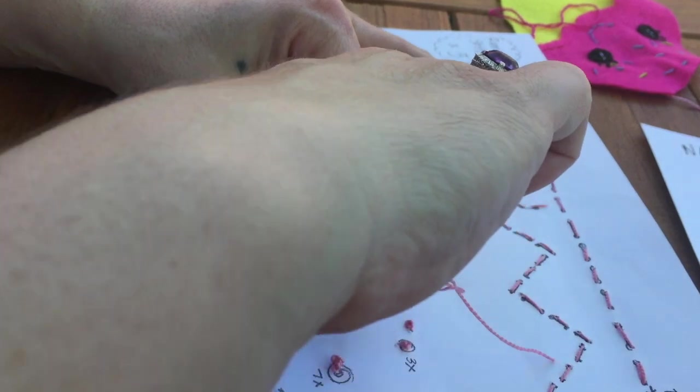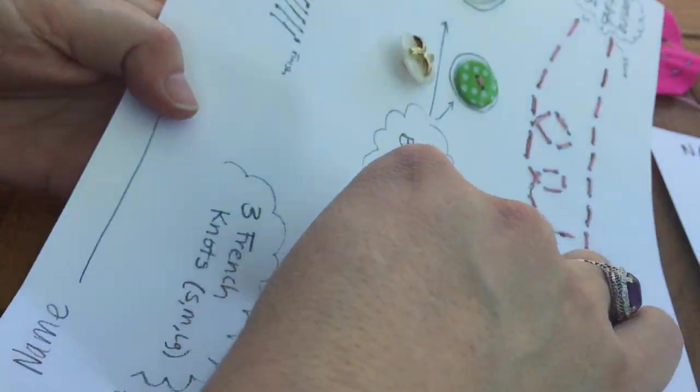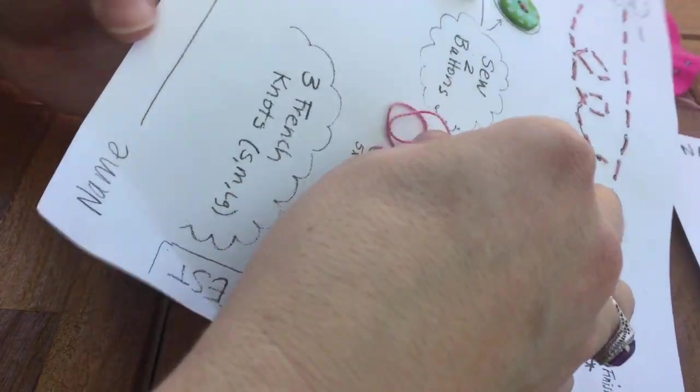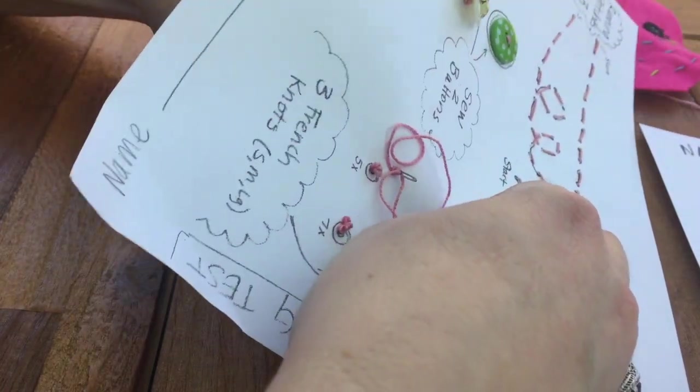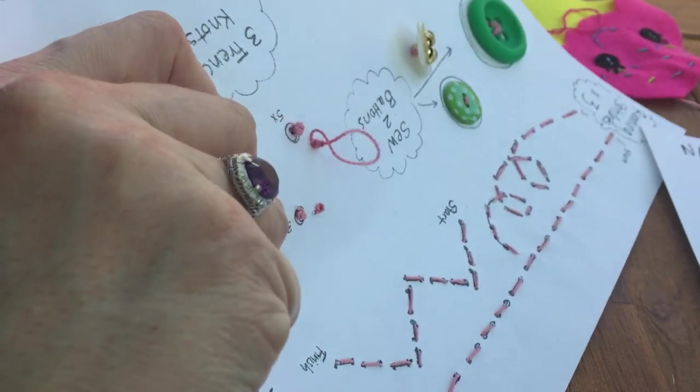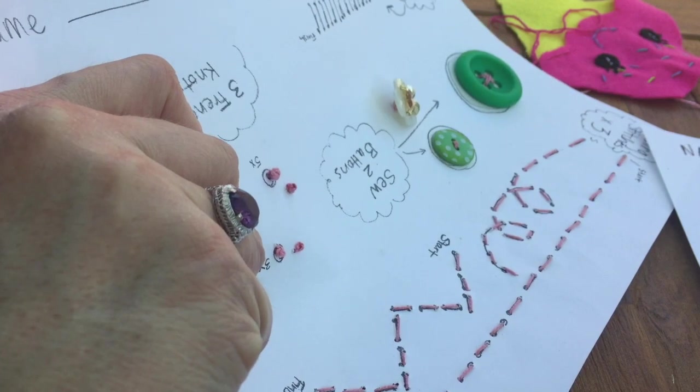Then I'm gonna come back in right next to where I had started, but not in the same hole—very close. I know it's a little bit trickier on paper than fabric. Then you just pull it and that is what five loops looks like.